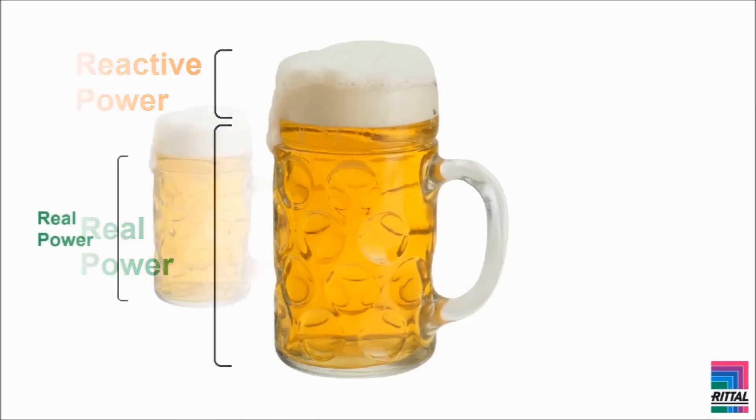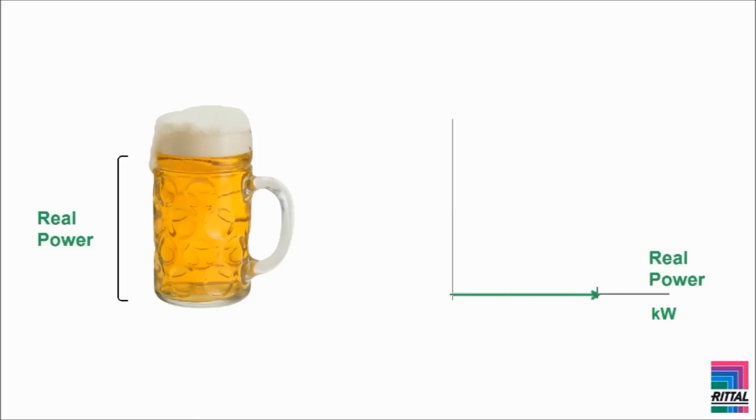Apparent power is often depicted in a diagram with the real power, which is measured in kilowatts, along the horizontal axis. The reactive power is indicated on the vertical axis. To find the representation of the apparent power in this diagram, you draw lines from the end of the arrows representing reactive and real power. The apparent power, which is measured in kilovolt amps or KVA, can be drawn where these lines intersect.